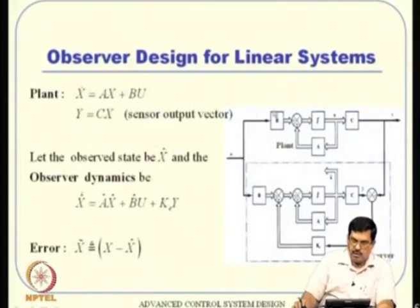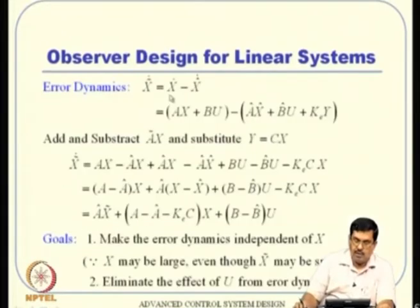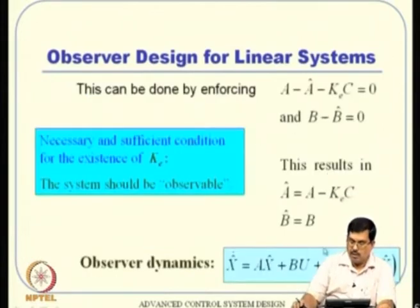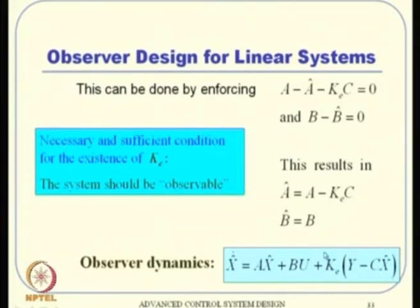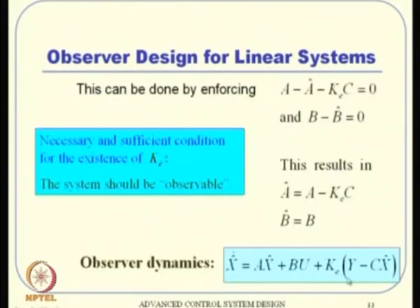For a linear system observer design, we have a plant and we propose that observer dynamics be constructed with K_e as the estimator gain. The error is defined as x minus x_hat, where x_hat is the estimated state and x is the true state. We go through error dynamics to ensure x_tilde_dot is not a function of state and control, by enforcing certain coefficients to zero. This gives observer dynamics of the form A*x_hat + B*u, plus an additional term K_e times (y minus C*x_hat), which is the innovation term.